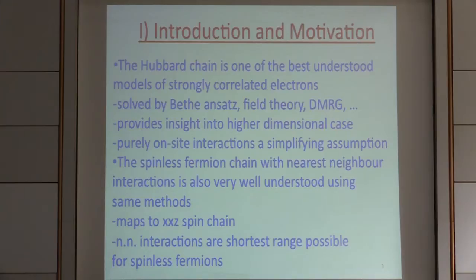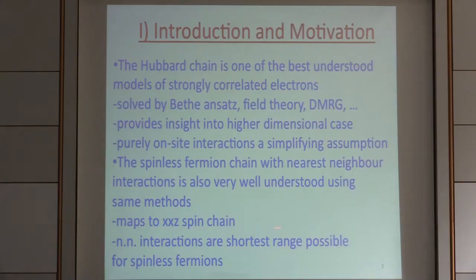Another model, which looks even simpler, discards spin — we have spinless fermions. If we have a spinless fermion chain, they can't have on-site interactions by Fermi statistics, so the shortest-range interactions are nearest neighbor. This model has also been studied very extensively by all the same methods, and it maps onto XXZ spin chains. It's been quite useful for understanding behaviors of actual one-dimensional systems and also higher dimensional models.